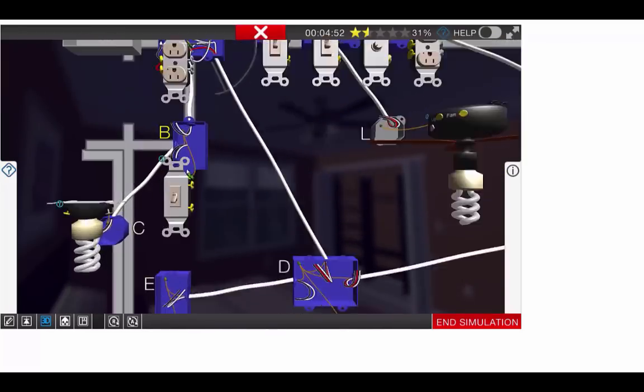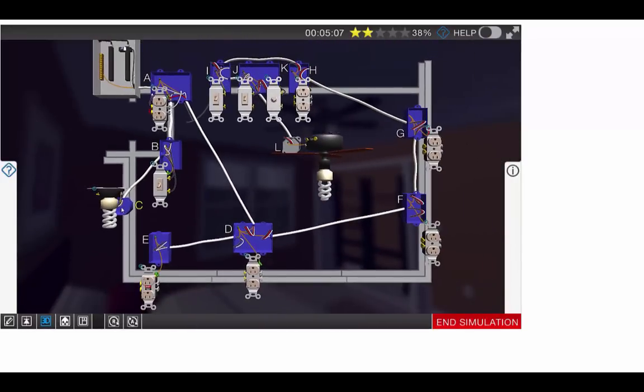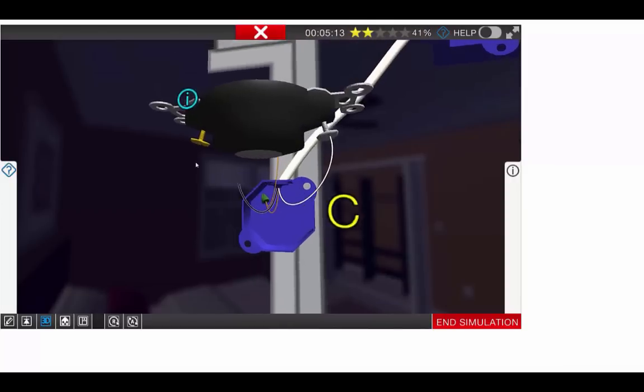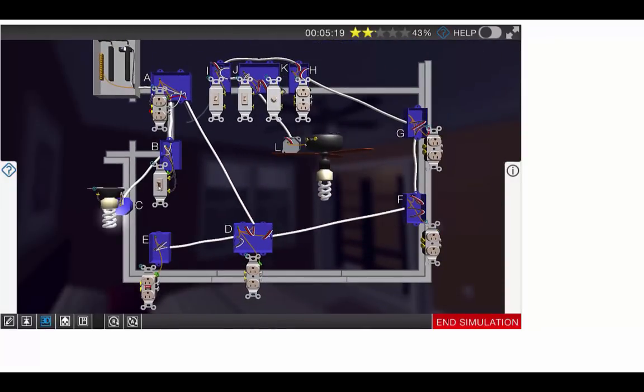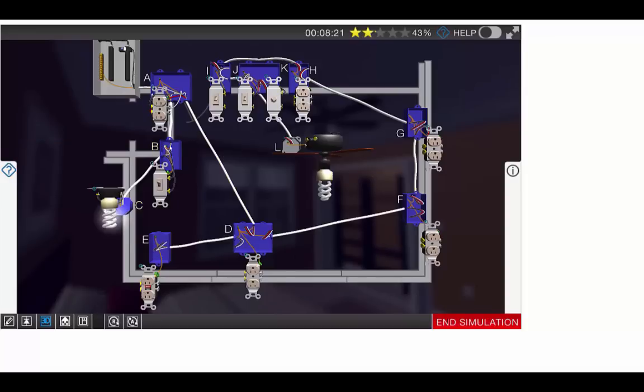We'll now move down to B. We'll tie our neutrals together. We're going to tie our hot to our switch. I like to use the top side of my switches for my hots. Then our switch leg going to the light fixture will be on the bottom. As we move to the light fixture itself, we always put our neutral to our silver and our hot will go to our brass. That will complete the light. You notice we turn the switch on—power works. We have the power coming from the panel, we've made a wire nut in box A, it comes through B, so this side of the circuit is working now.